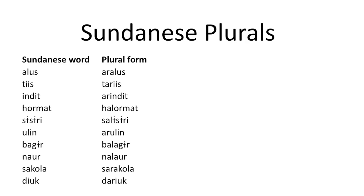In most of the words, the marker is this 'ar'. If the Sundanese word, the original one, begins with a vowel like 'alus' or 'indit' or 'ulin', then 'ar' is just added at the beginning. If the Sundanese word begins with a consonant, then the 'ar' appears after that first consonant.